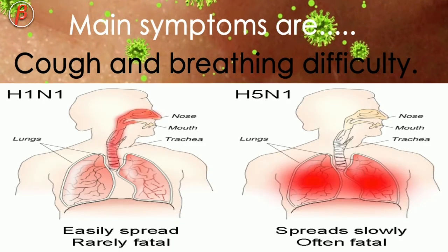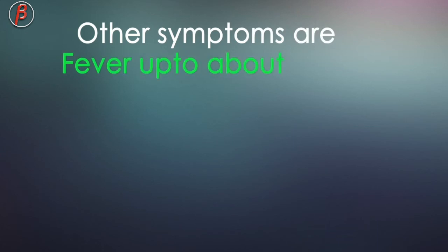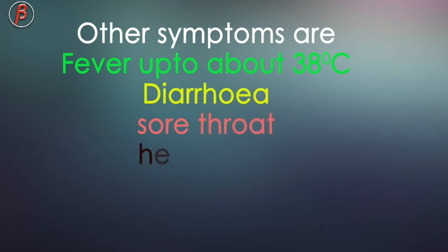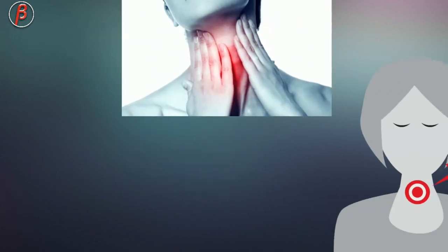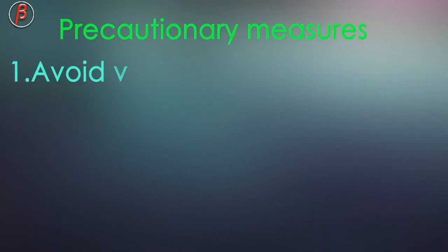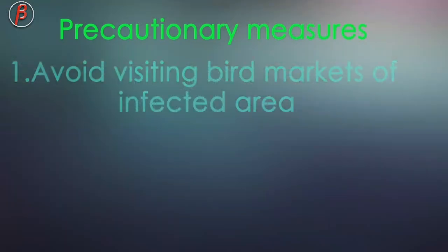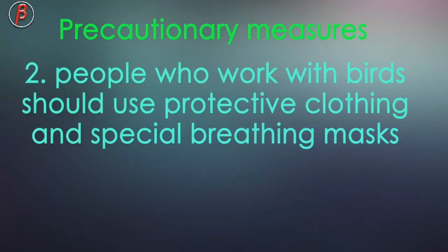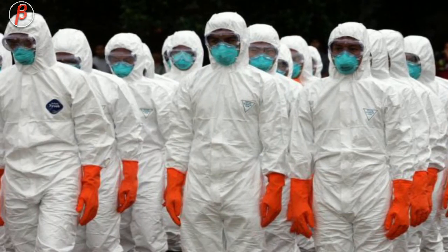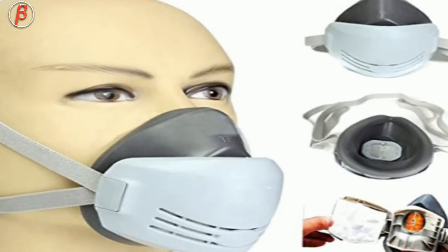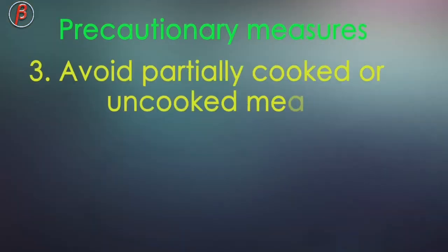Here you can observe the differences between swine flu and bird flu. Other symptoms of avian flu include fever up to about 38 degrees centigrade, diarrhea, sore throat, headache, and runny nose. To control this disease, we have to take precautionary measures like avoiding visits to bird markets in infected areas. People who work with birds should use protective clothing and special breathing masks, which protect from viruses entering the lungs. Most importantly, avoid partially cooked or uncooked meat because it carries viruses easily.